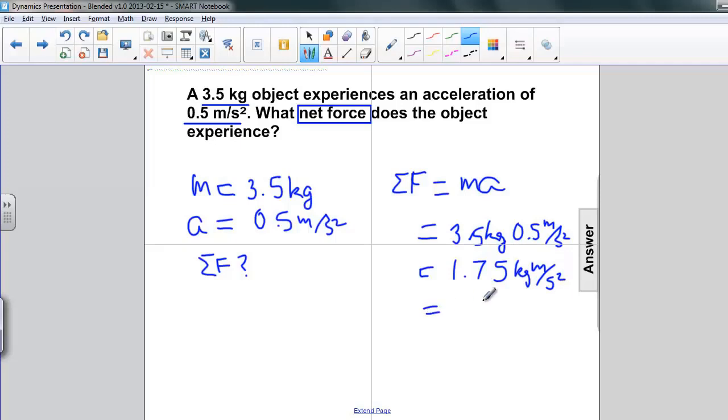And as we know from our definition, kilogram meters per second squared is just newtons. So we have 1.75 newtons, our answer.